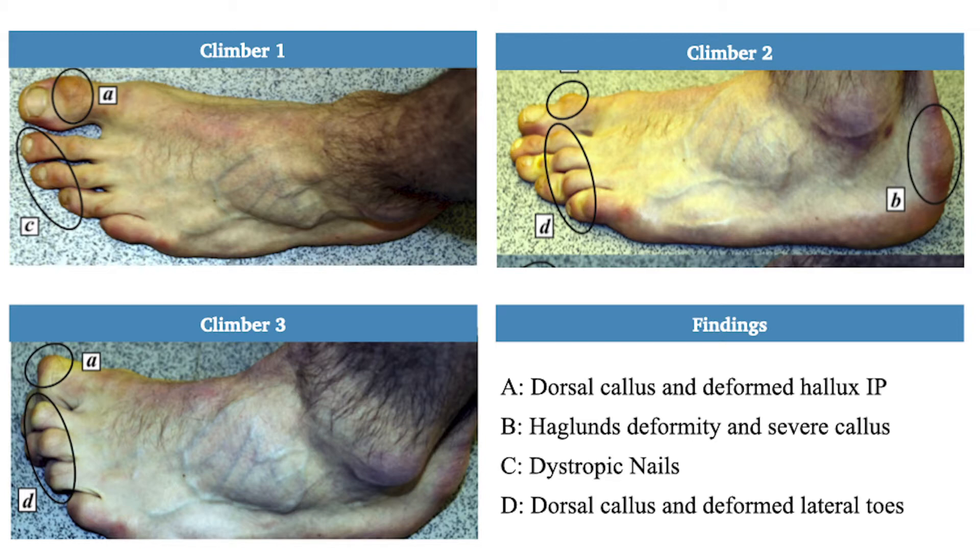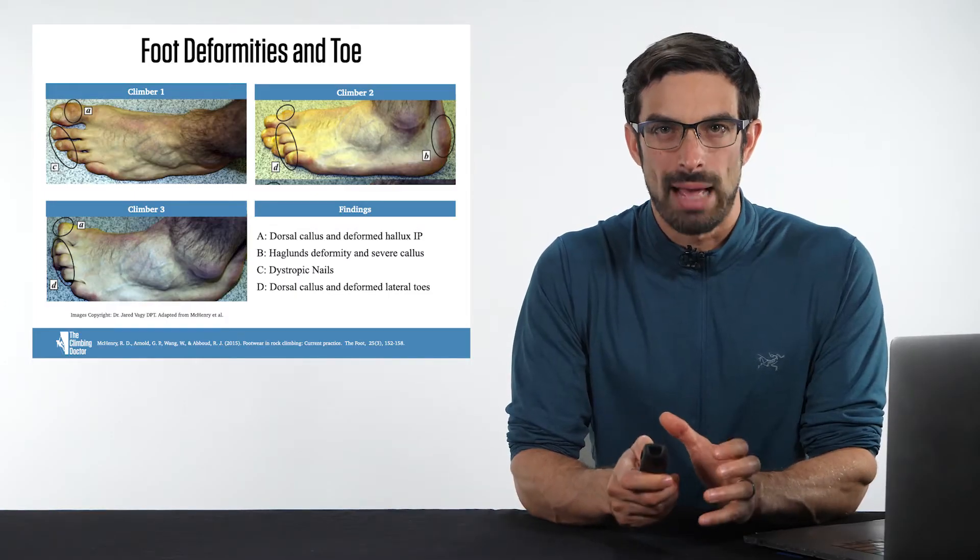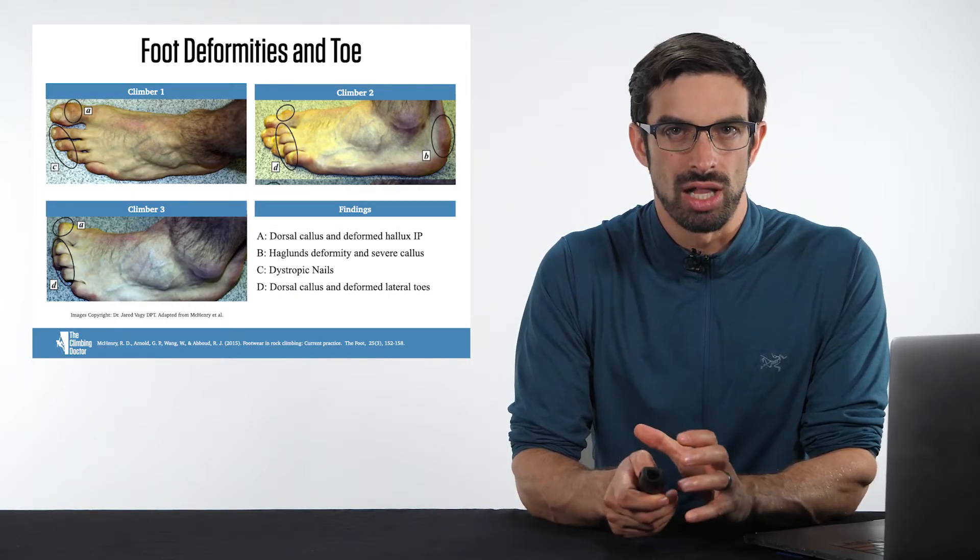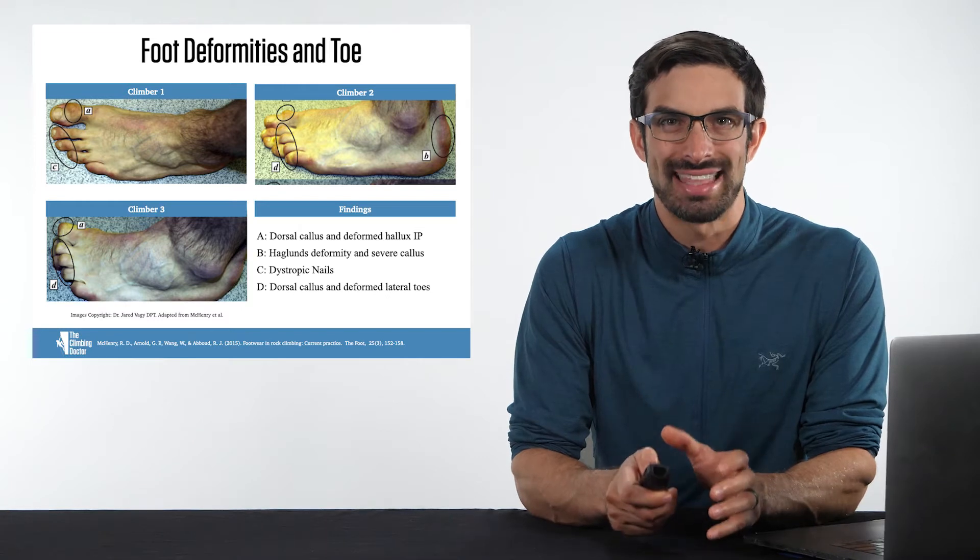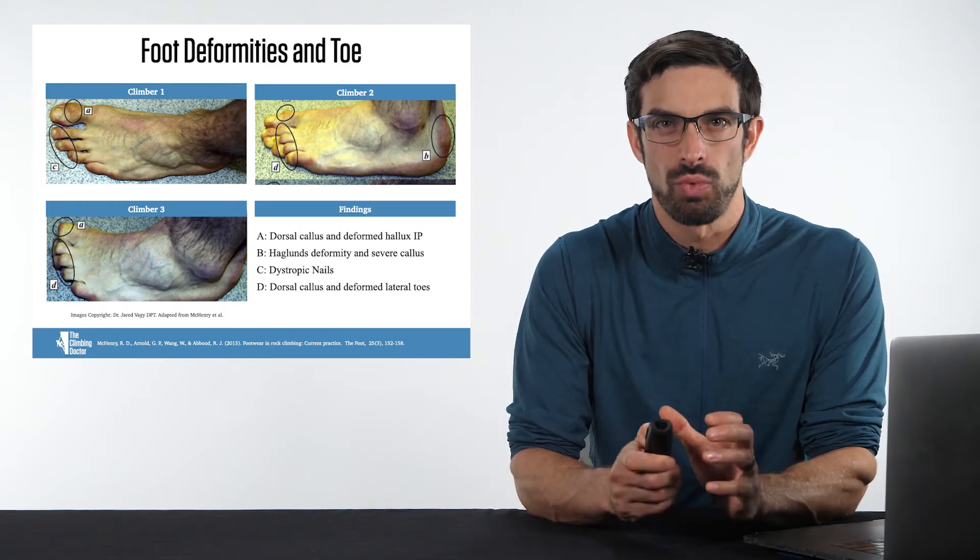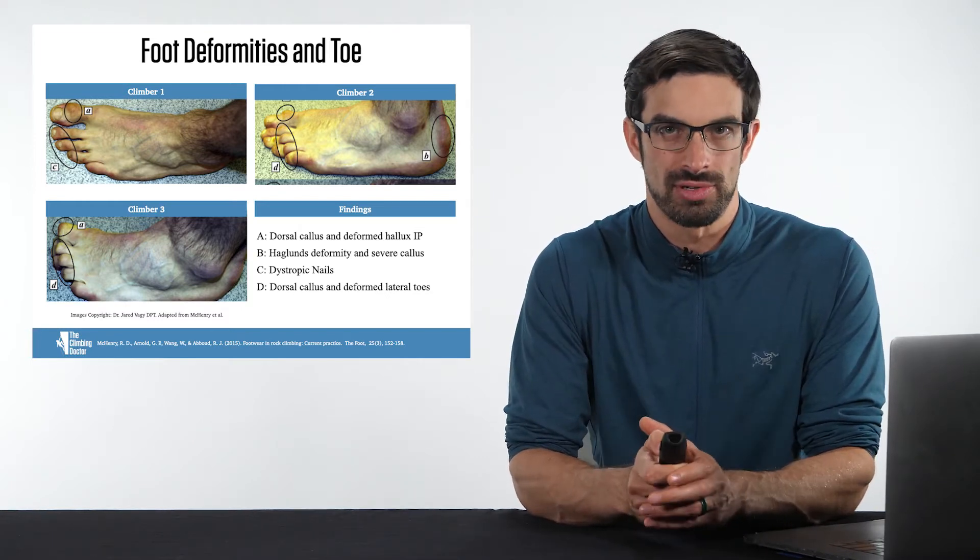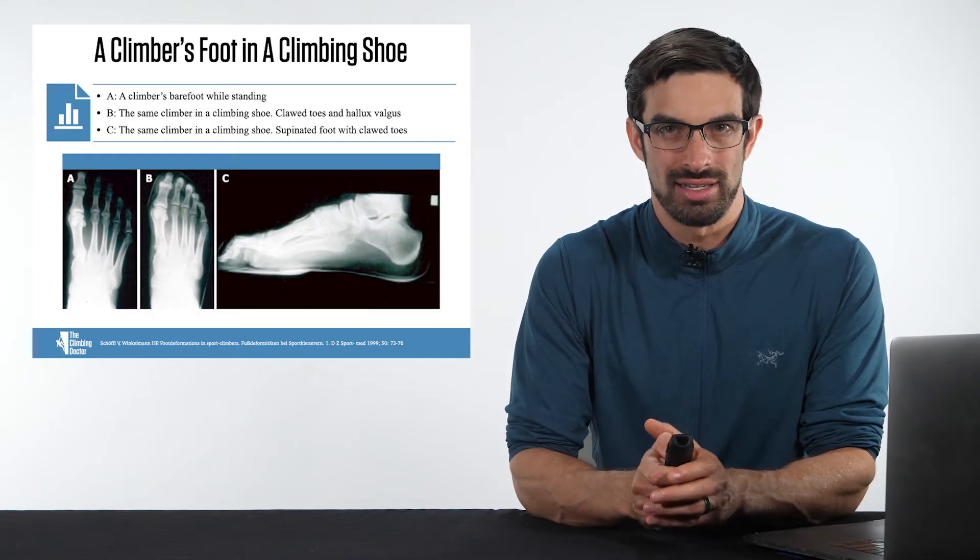In climber three, over the great toe we see a dorsal callus as well as a deformed hallux IP joint, and dorsal calluses and deformed lateral toes in the second through fourth digits. These images were adapted from a study by McHenry and colleagues that looked in depth at the different foot, ankle, and toe deformities in rock climbers.